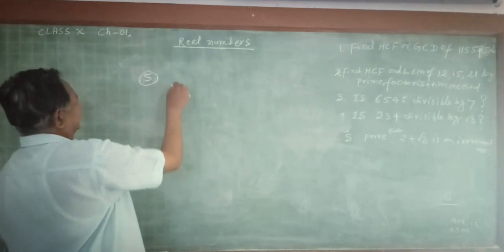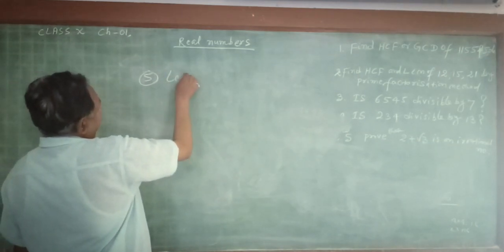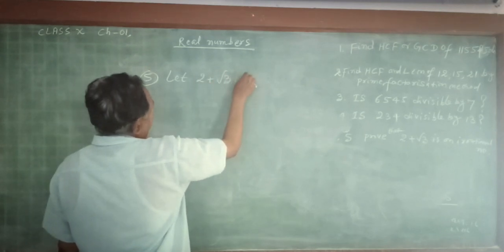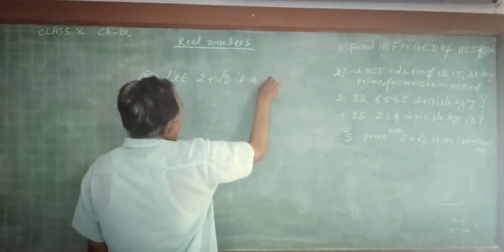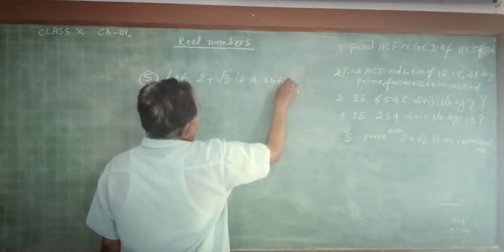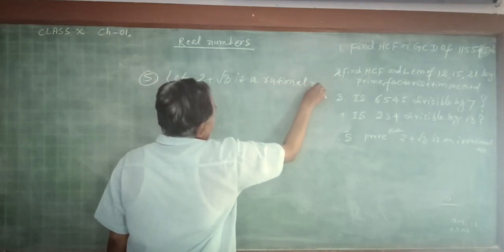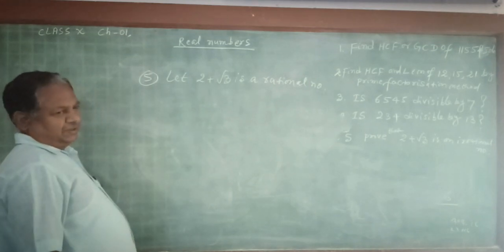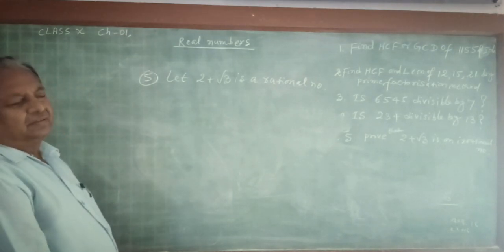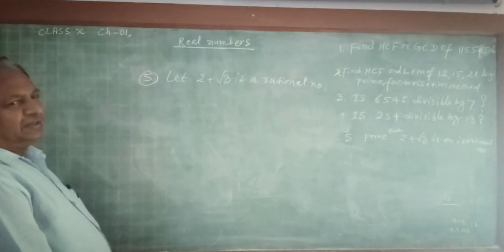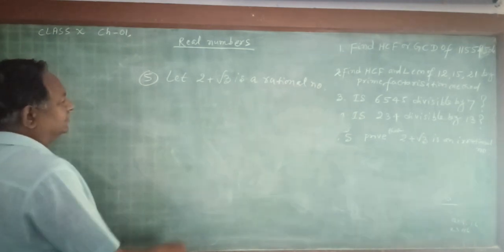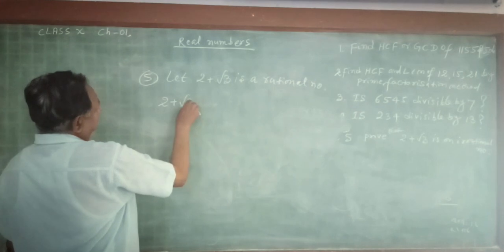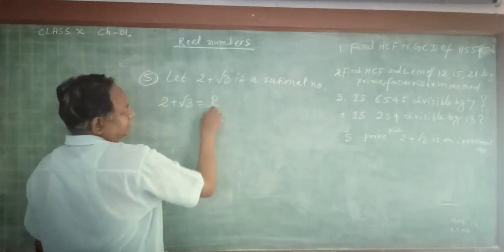Let it be a rational number. Let 2 plus root 3 be a rational number. If it is a rational number, then it can be represented in the form of P by Q. So 2 plus root 3 is equal to P by Q.